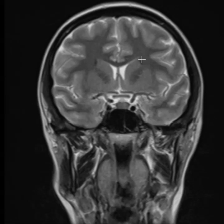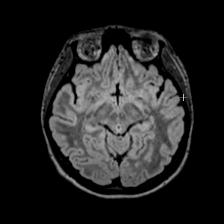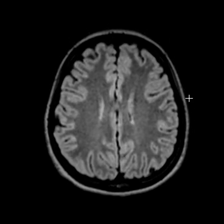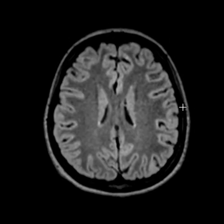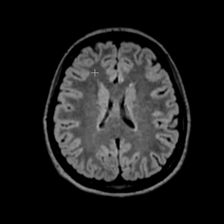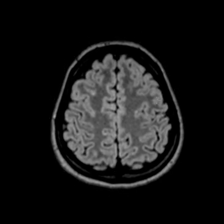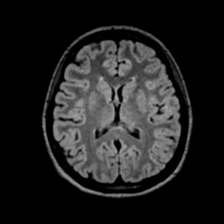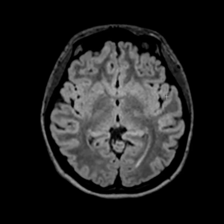This view shows the pituitary gland, which is not flattened or low. When there is high intracranial pressure from pseudotumor cerebri, the pituitary tissue gets flattened and compressed — it can look very small — but this patient does not have that. This is a FLAIR sequence showing the brain in high detail. If a patient has multiple sclerosis, there are little white specks throughout the cerebral white matter in the dark area in the middle. Everything looks nice and normal; I do not see any evidence of demyelinating plaque, so no evidence of MS in the brain or the optic nerves.